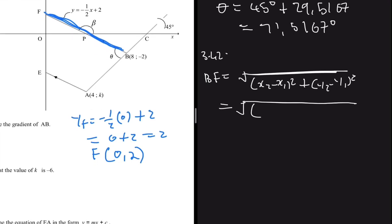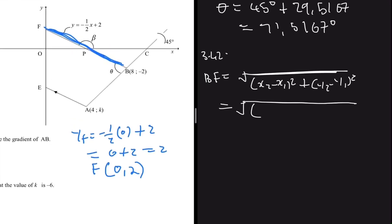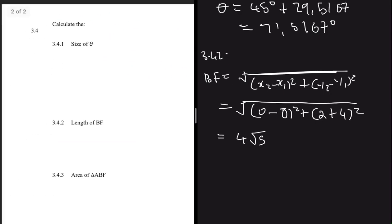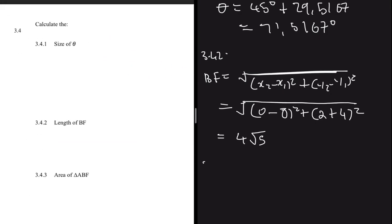Taking F as our second point and B as our first point in the distance formula: length BF equals the square root of (0 minus 8)² plus (2 minus minus 2)², which is the square root of 64 plus 16. Putting that in the calculator gives 4 root 5.